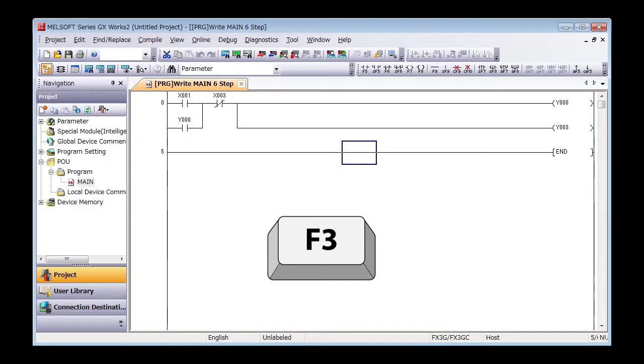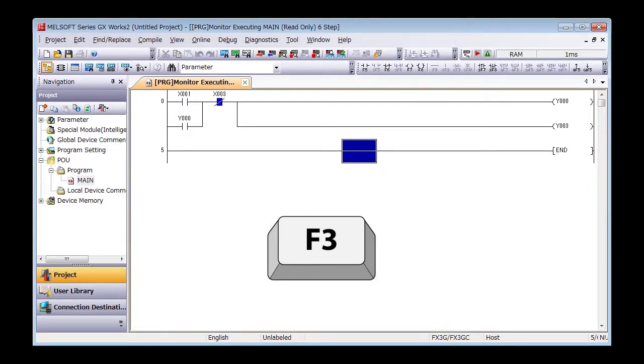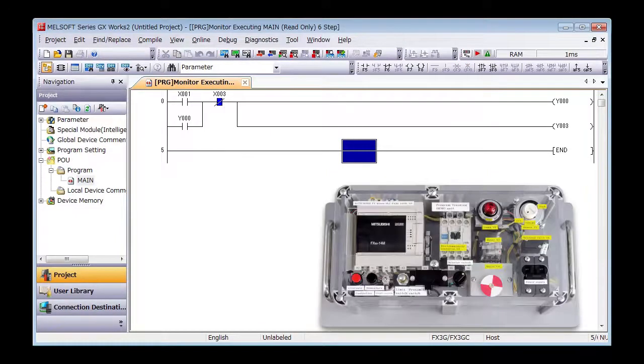Let's check on GXworks2. Press F3 on the keyboard. The monitor mode should start. Press x1, and the output should turn on.